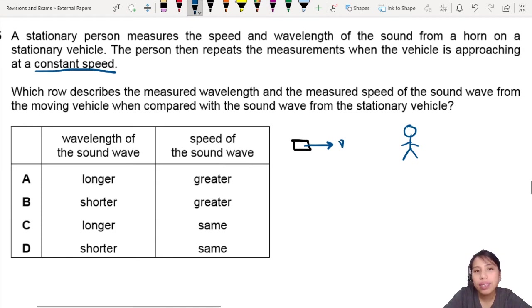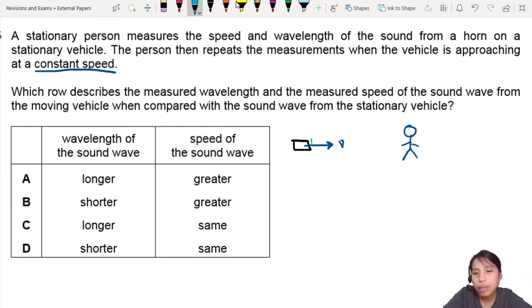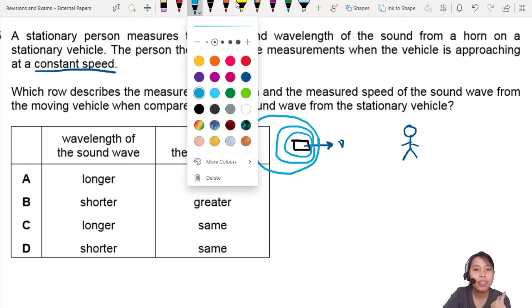So what happens is the waves of this horn will bunch up or clump together because this vehicle is moving. So you see, I'll try to draw a clump out like that. Yes, something like that. So when the waves are more clumped up, that means it's a higher frequency. Okay.